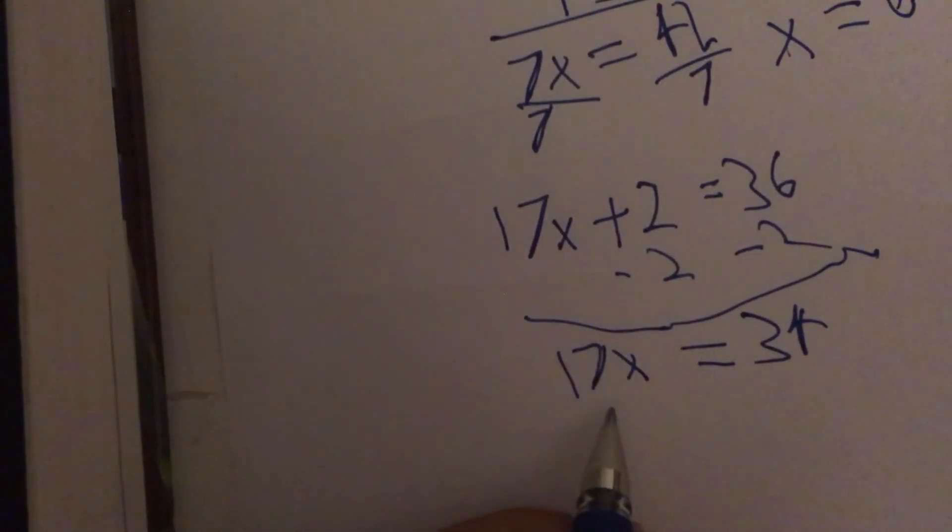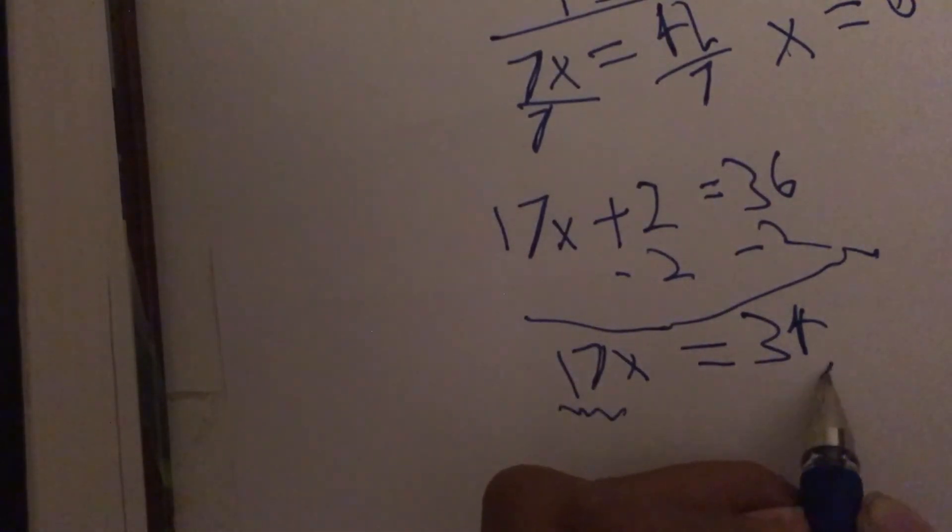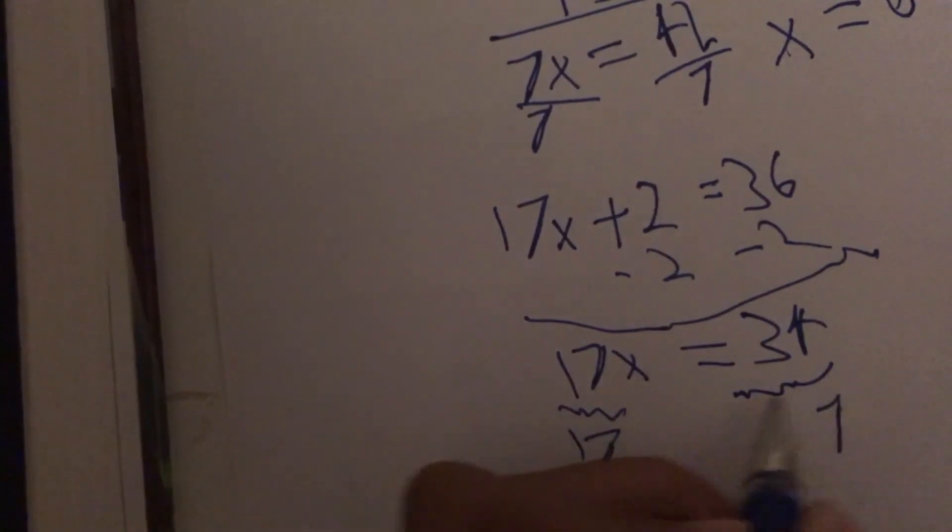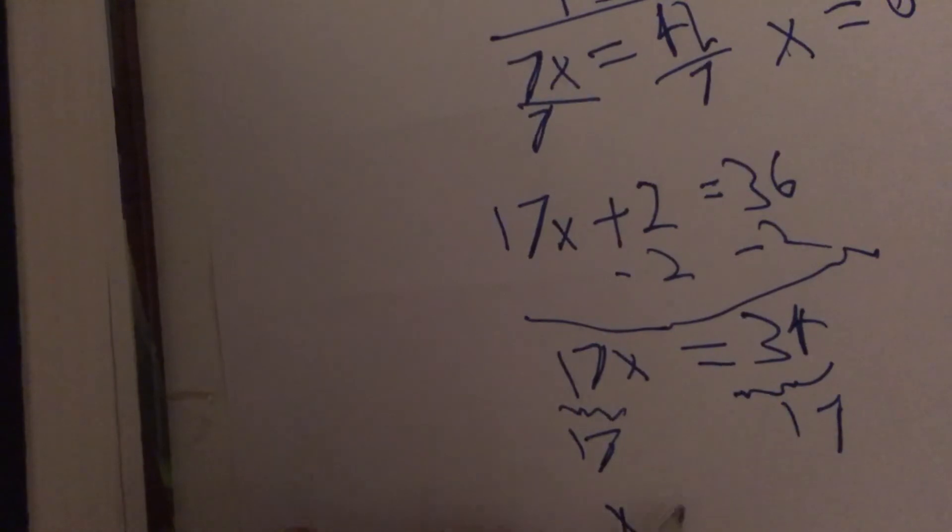Now, all you have to do is divide both sides by 17, and you get x is equal to 2.